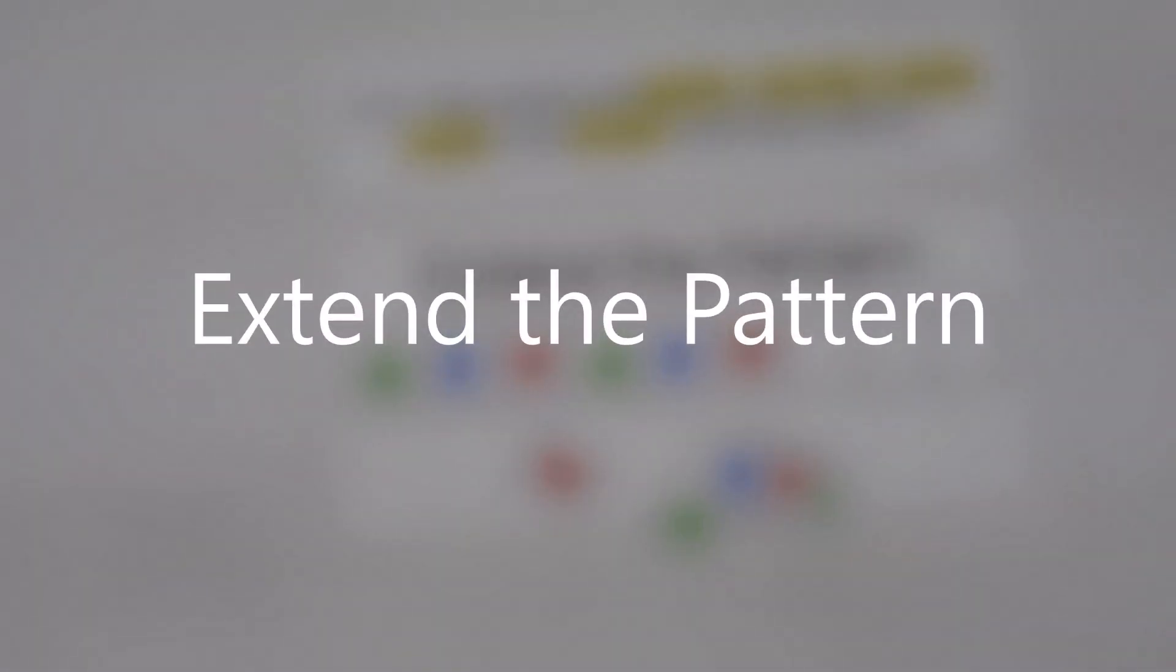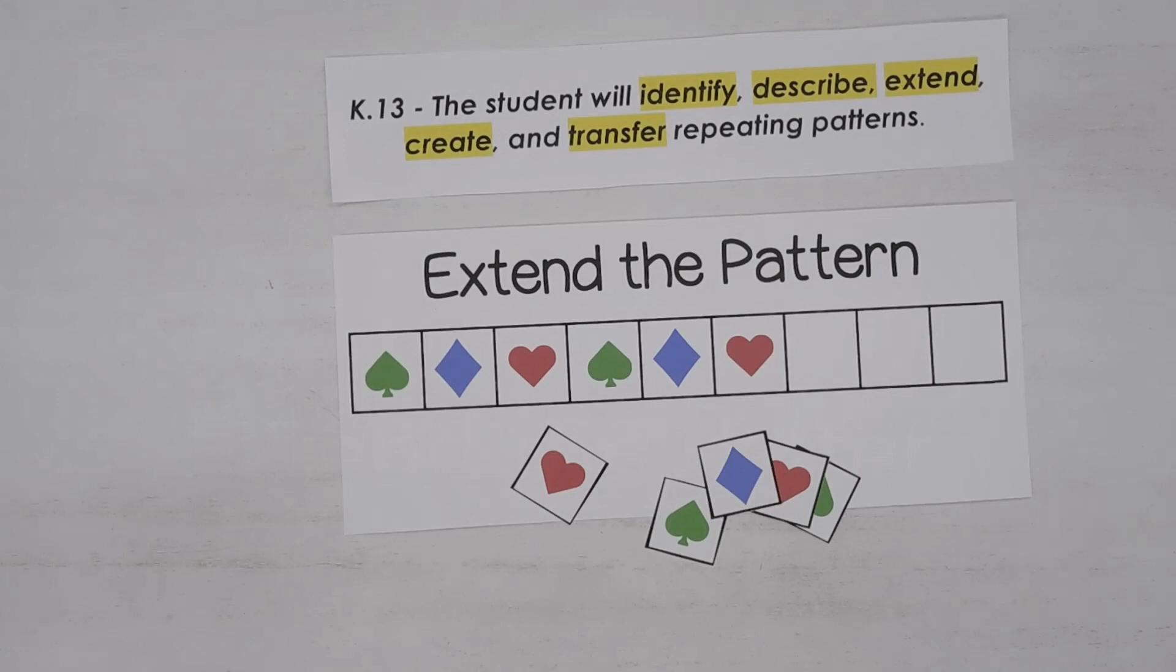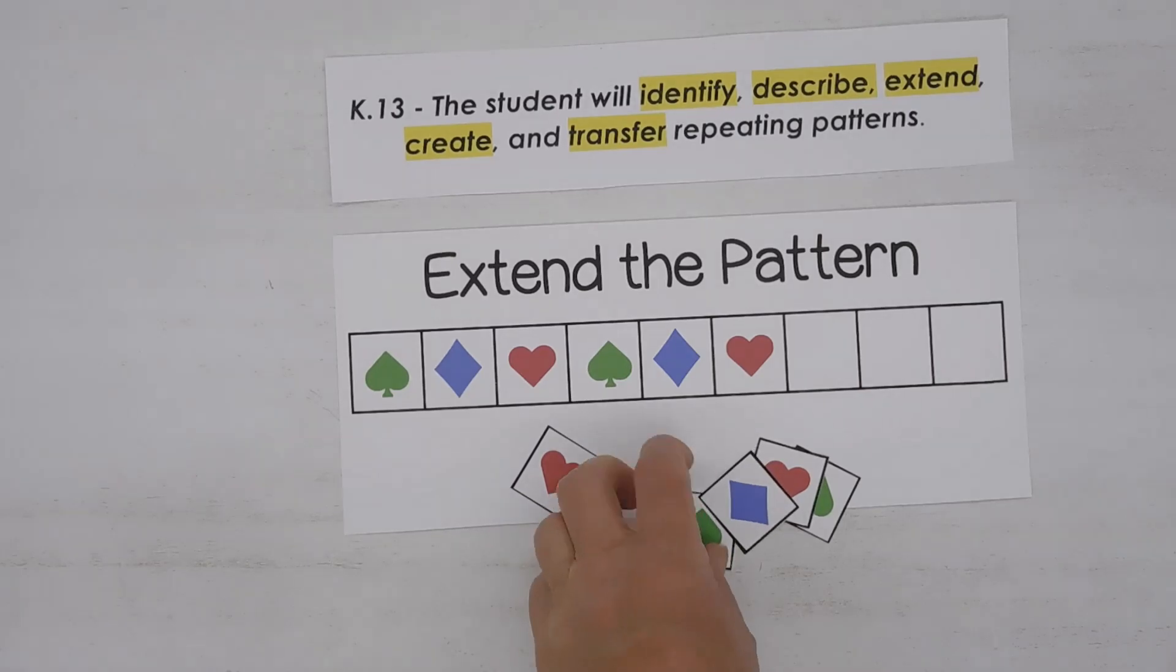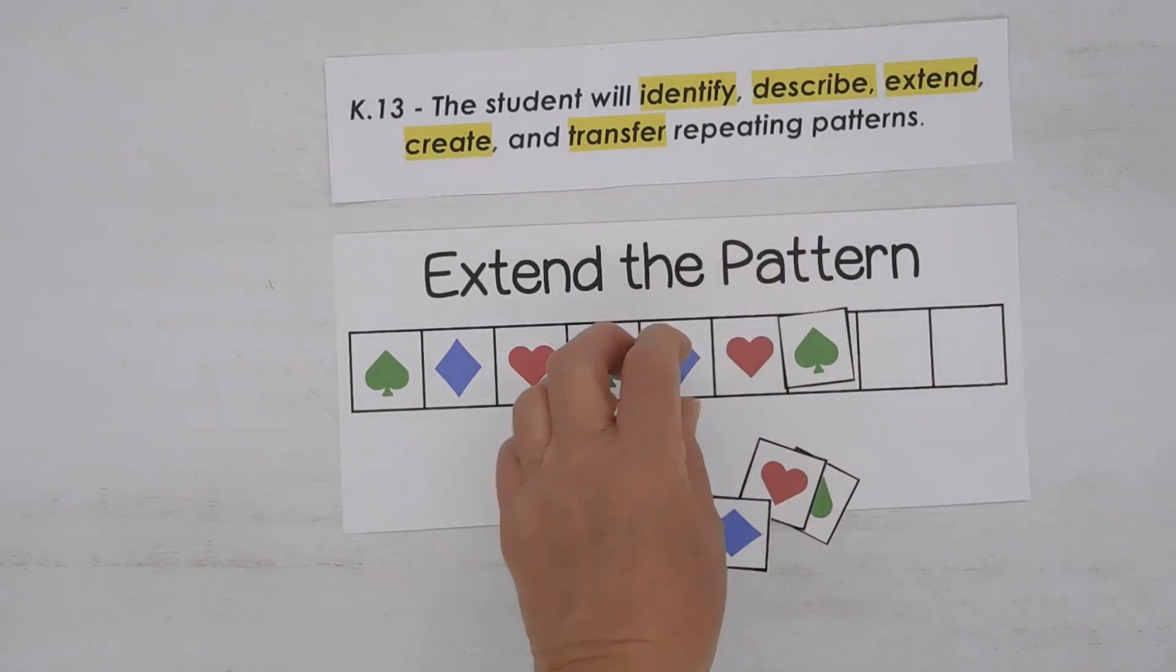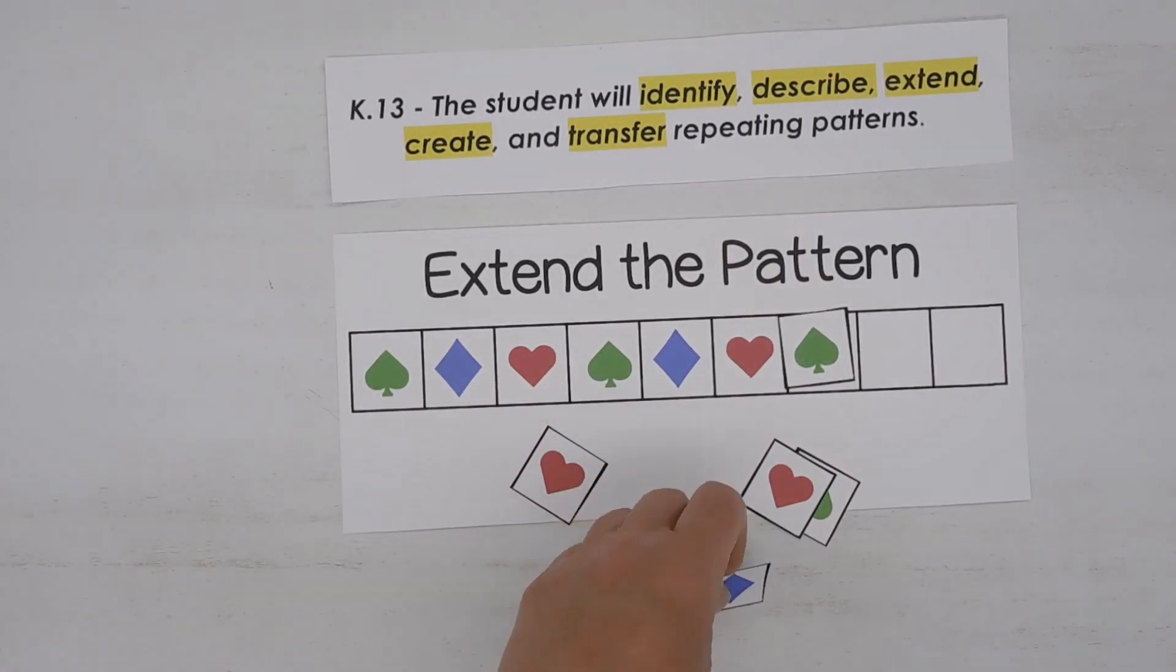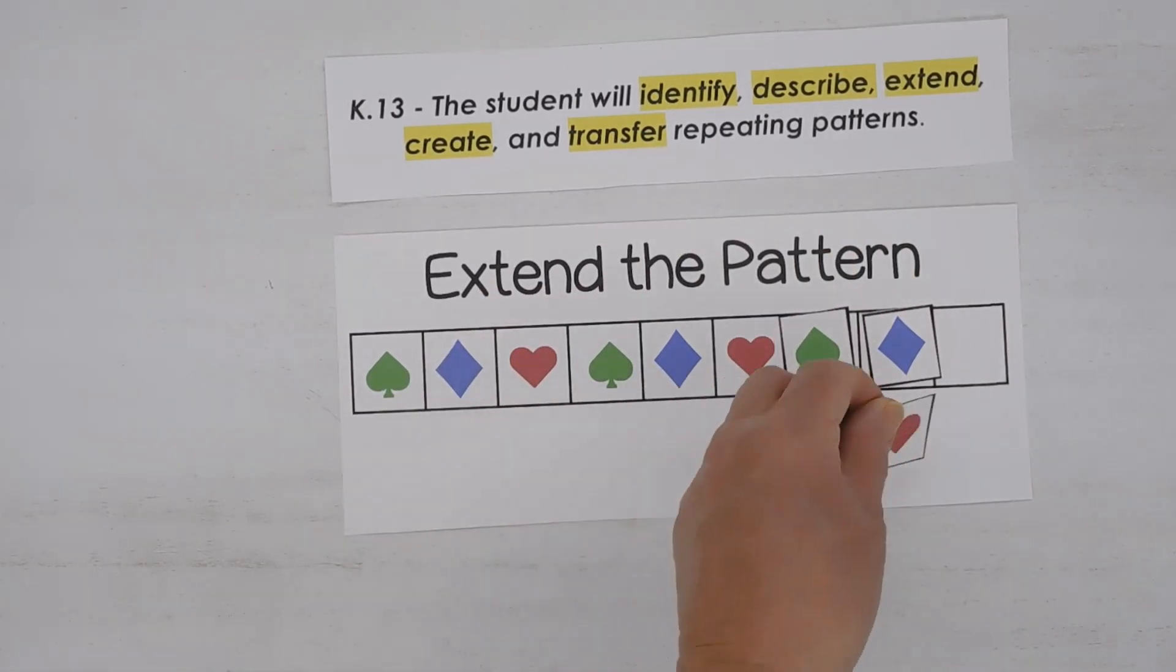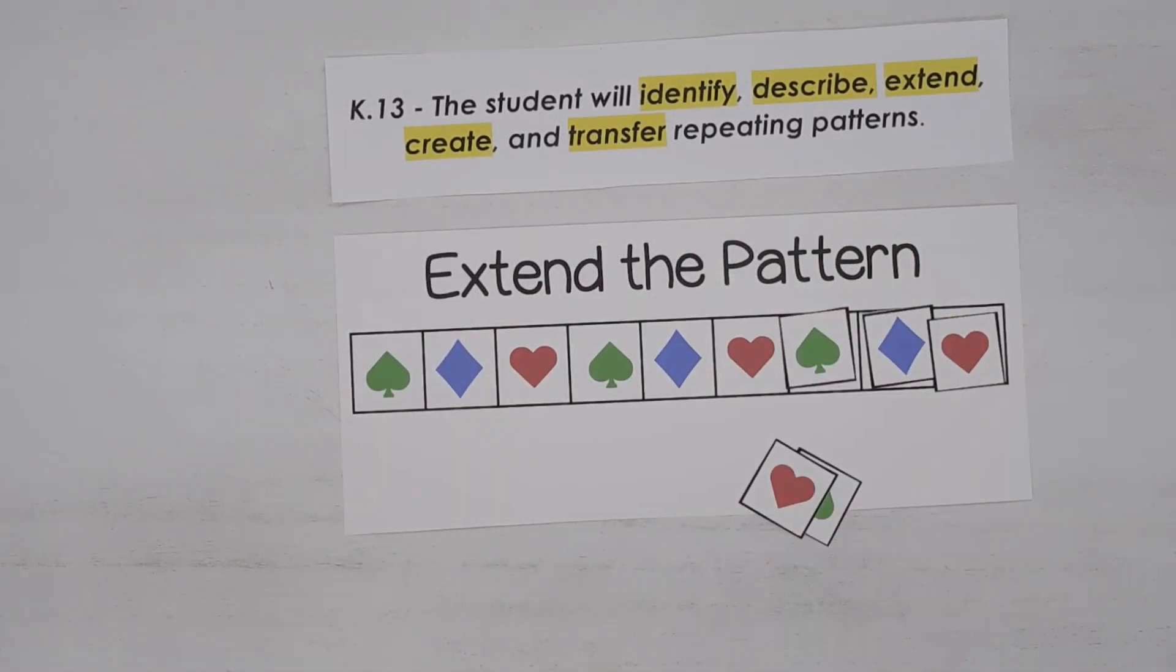Now we have an activity that says extend the pattern. Look at the pattern. Now I'm going to extend it in the empty spaces. So I'm going to put a spade, and then I'm going to put this shape, and then a heart. And I've extended the pattern.